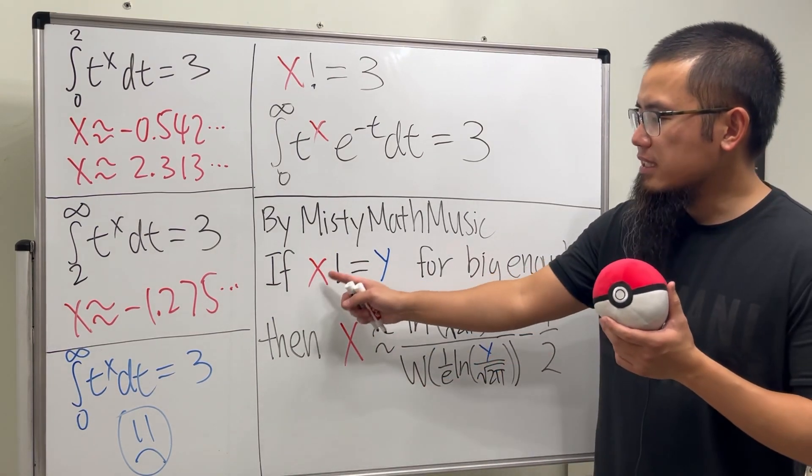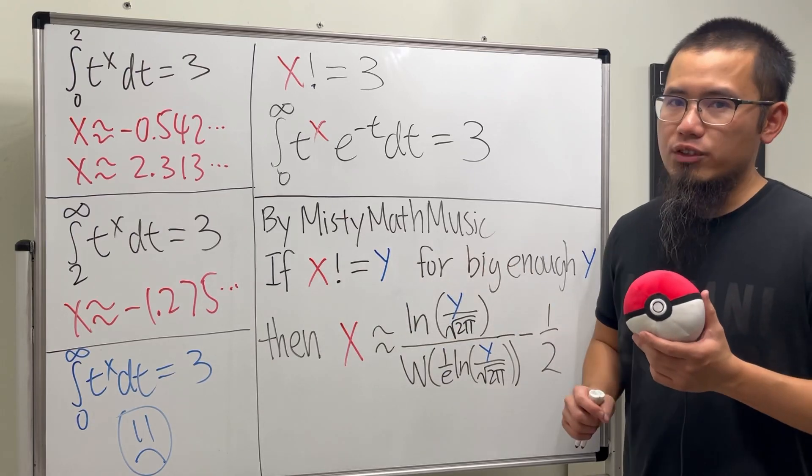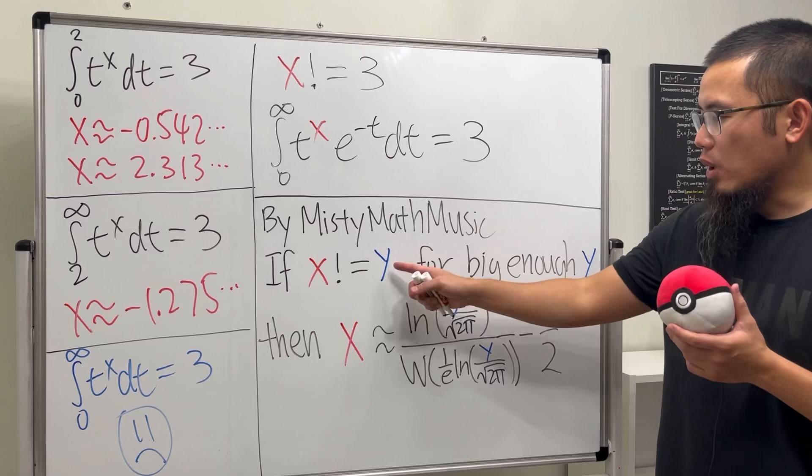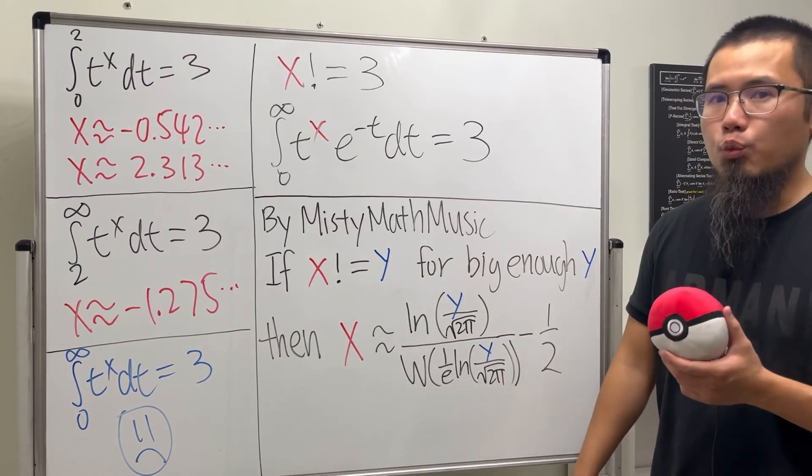So this right here is actually a very good approximation if you want to solve the equation x factorial is equal to y. And we just have to make sure that y is big enough.